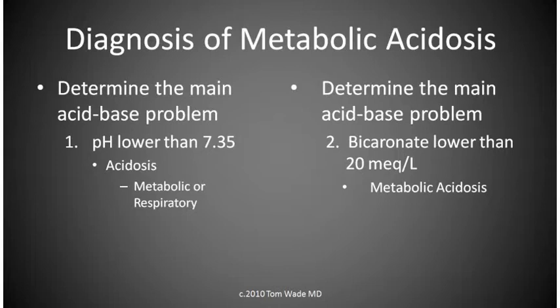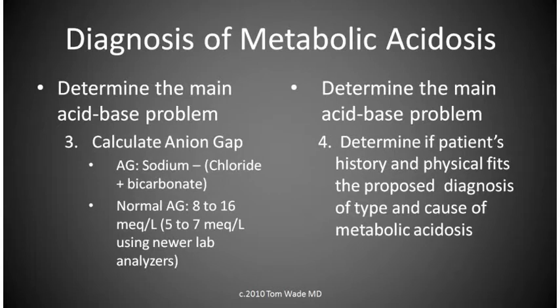Second, we look at the bicarbonate. If the bicarbonate is lower than 20 milliequivalents per liter, then we have a metabolic acidosis. Third, we calculate the anion gap to help classify the metabolic acidosis. And fourth, we look at the patient's history and physical to see if it fits the diagnosis of metabolic acidosis.